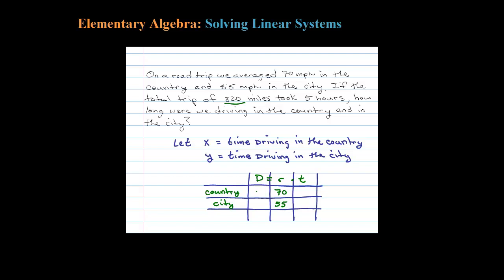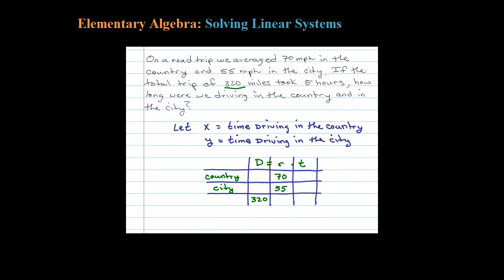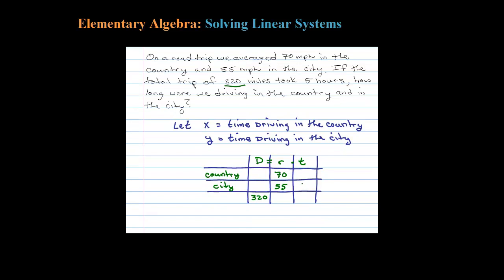If the total trip of 320 miles, 320 miles is the total trip, so that's not the amount of miles we drove in the country or the city, that's going to go here under total, so 320. Now the total trip took five hours, so I'll put that here, five.